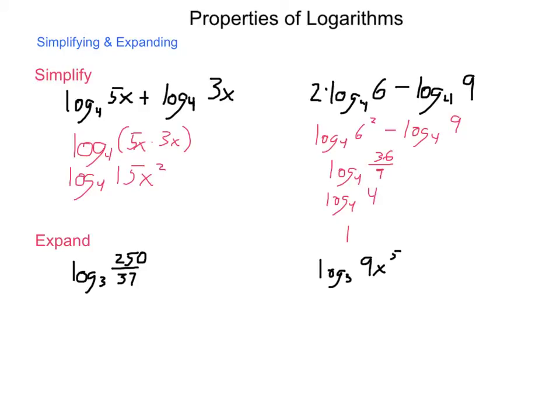Sometimes going the opposite way is more helpful in simplification. Log base 3 of 250 is 5 times 5 times 5 times 2, which we could turn into 5 cubed.